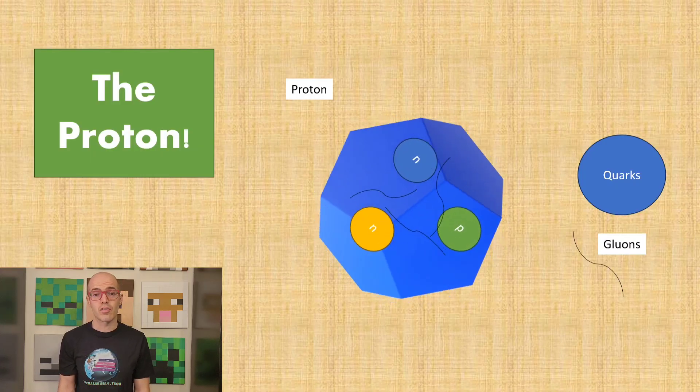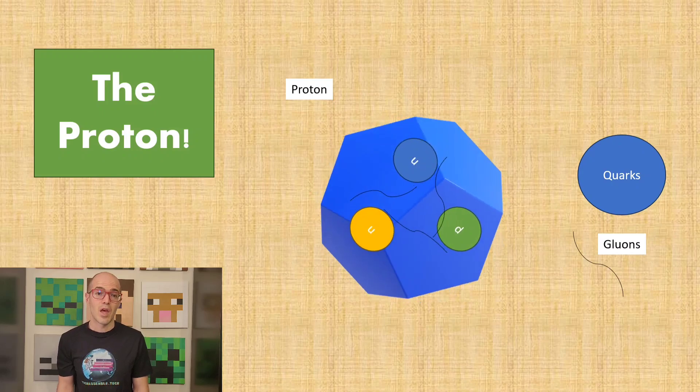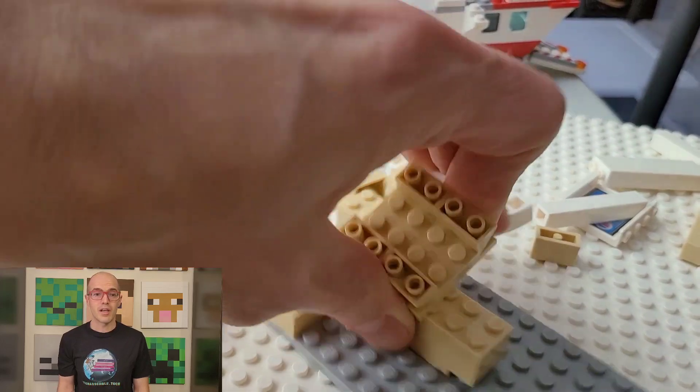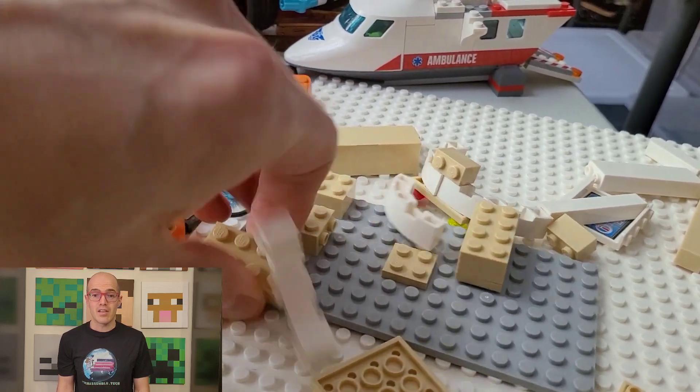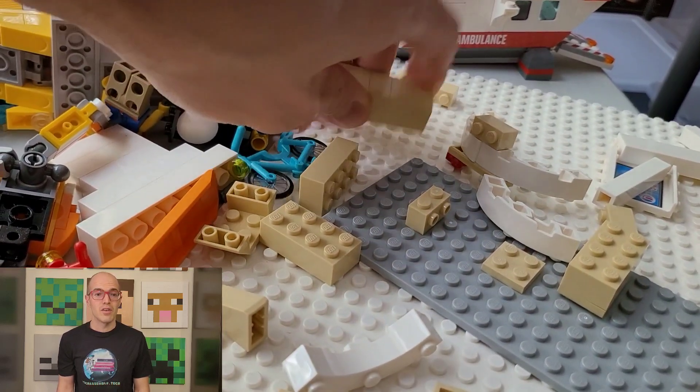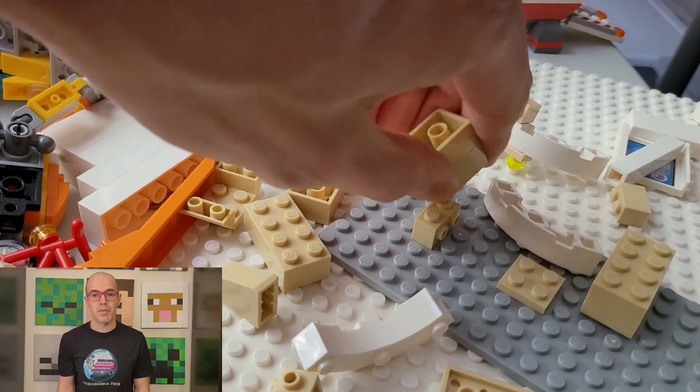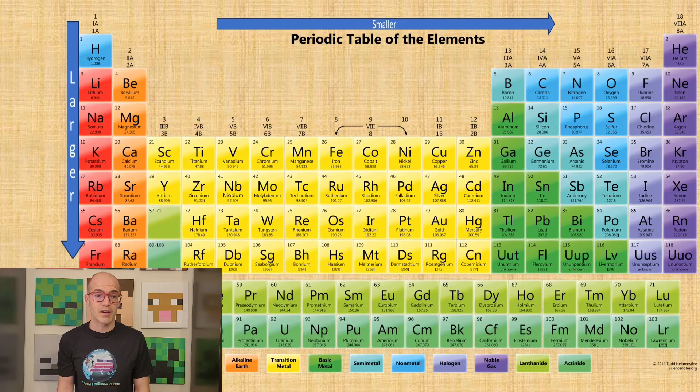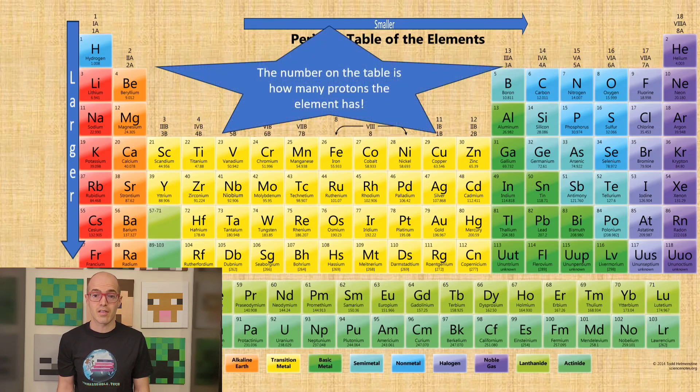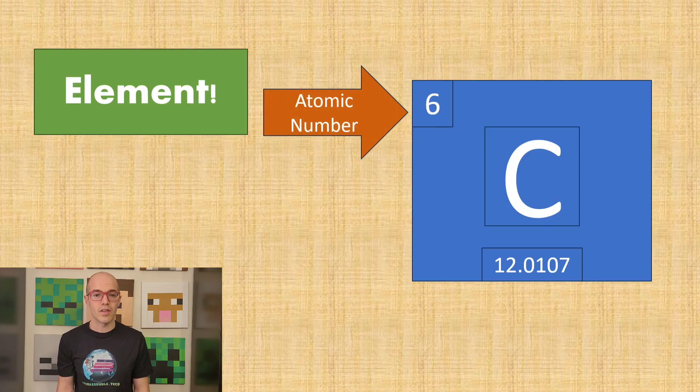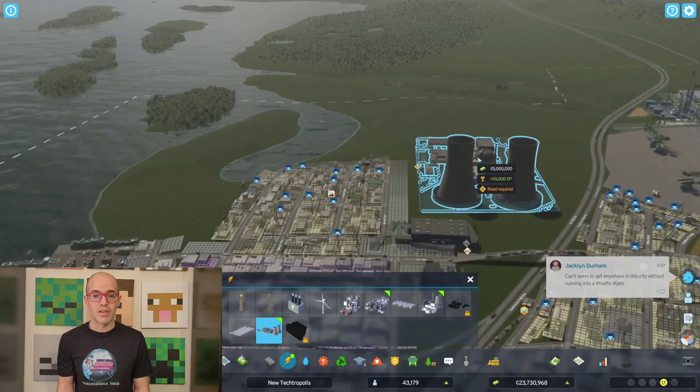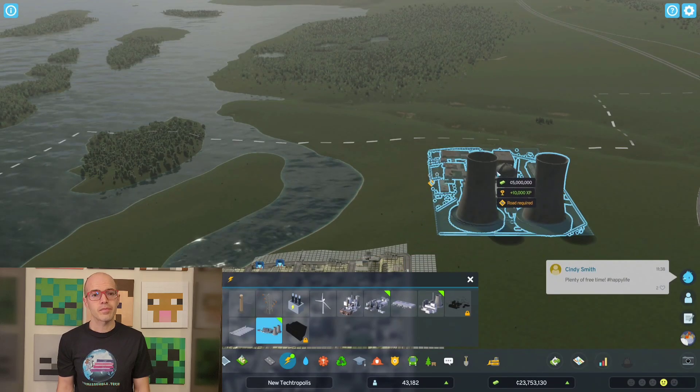Protons are positively charged subatomic particles found within the nucleus of an atom. With a relative mass of approximately one atomic mass unit, they play a crucial role in determining the atom's identity and chemical properties. In addition to their fundamental role in forming the nucleus alongside neutrons, protons also participate in the electromagnetic interactions that bind atoms together in molecules and solids. Their number within an atom defines its atomic number, which in turn determines its place in the periodic table of elements. Protons are not only essential in understanding the behavior of matter on Earth, but also play a vital role in astrophysics influencing the dynamics of stars and the cosmos at large.